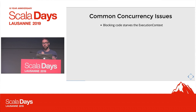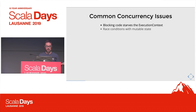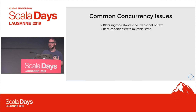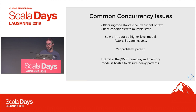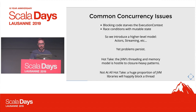That said, concurrency is still difficult. If you run blocking code, it's really easy to starve the execution context of threads accidentally. It's easy to run into race conditions if you have mutable state. People try to solve this by introducing higher-level models — actors, streaming, and a lot of newer approaches. Problems do persist. I'd argue the JVM's threading and memory model is fundamentally hostile to closures in general, and a huge proportion of JVM libraries will happily block your threads. Rob Norris' talk yesterday made this point much more strongly.